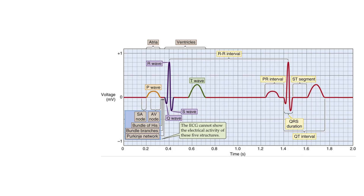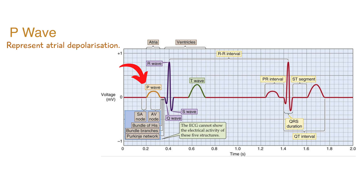If we look at the waveform of an ECG, it's divided into these key areas. We have P-waves. P-waves represent atrial depolarisation. Normally, in healthy individuals, there should be a P-wave before each QRS complex.